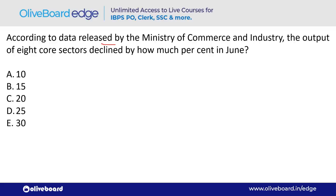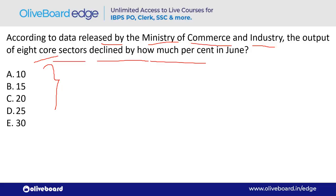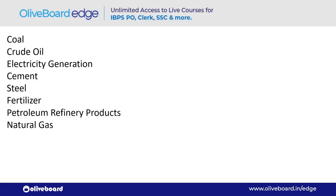According to data released by the Ministry of Commerce and Industry, the output of 8 core sectors declined in June. The 8 core sectors are: Coal, Crude Oil, Electricity Generation, Cement, Steel, Fertilizer, Petroleum Refinery Products, and Natural Gas.